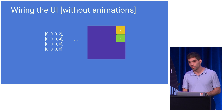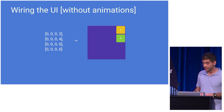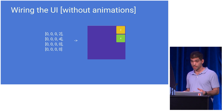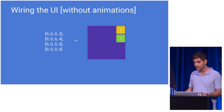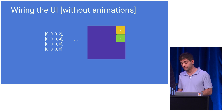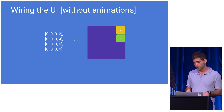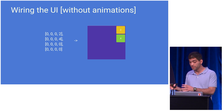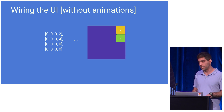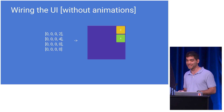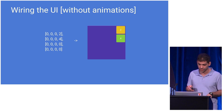The next thing we need to do is to wire our UI. We get an update from the store with a new state, and we need to show that on the screen. Without animations, this is pretty straightforward — we just get the state from the store update and build a widget tree that shows the board for that state. Animations make this a little bit more complex, and this is what I'm going to talk about.